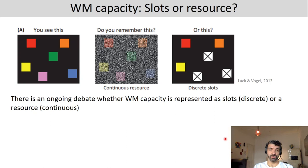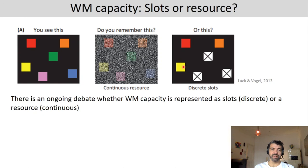Another question is how items are stored in working memory. There is still an ongoing debate about whether working memory capacity is better represented as discrete entities — slots — or more of a resource. In the slot model, three items are represented and well represented — it's all or nothing: either an item is represented or it is not. The resource model would claim you could represent all items, but not with high fidelity, or with some information loss spread across all items.